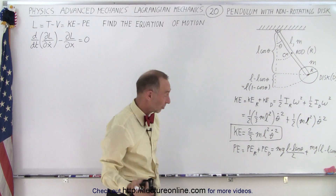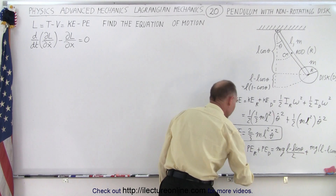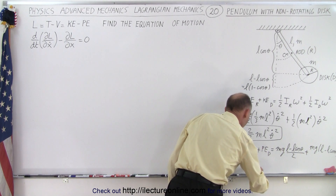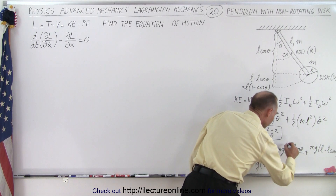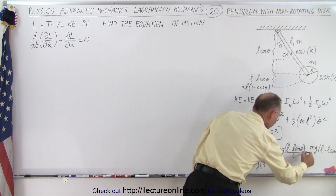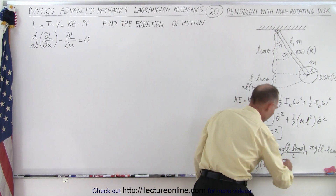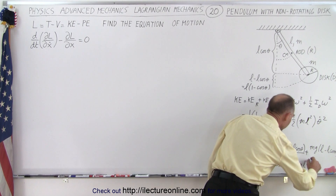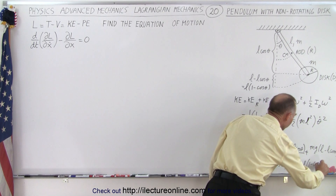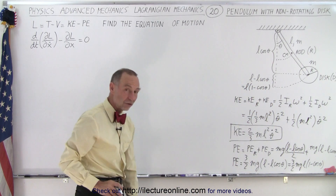Adding those together, we get one plus one-half, which is three-halves. So the total potential energy of the system is (3/2) m g (L minus L cosine theta). Factoring out L, we can write this as (3/2) m g L times (1 minus cosine theta), which may be easier to work with.